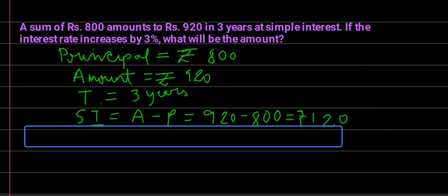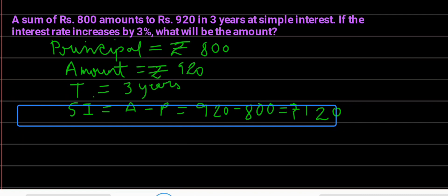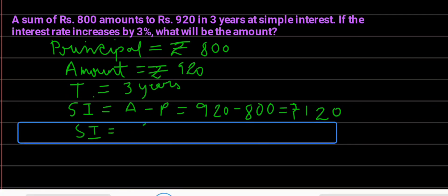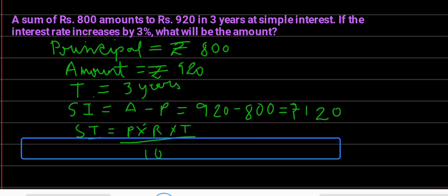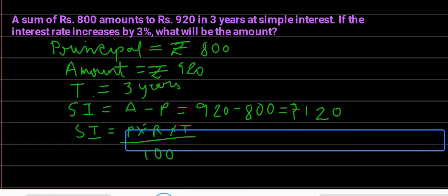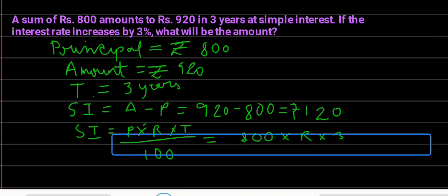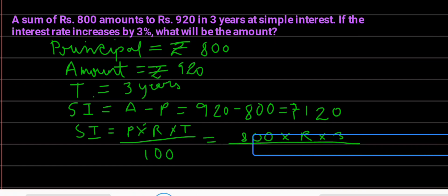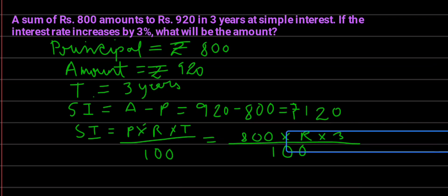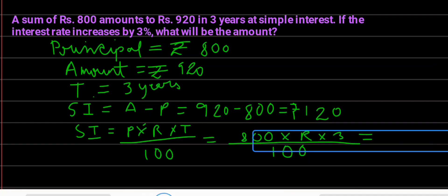Now you can find the rate of interest because you have the simple interest, the time period, and the principal. The formula is: SI equals P into R into T divided by 100. Here, P is 800, R is what we need to find, and T is 3.